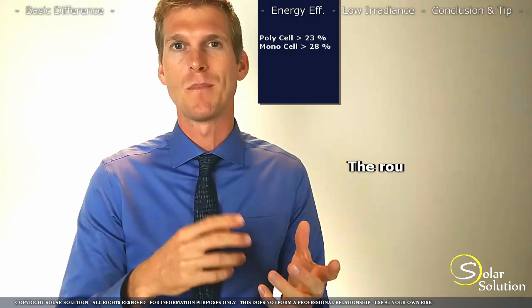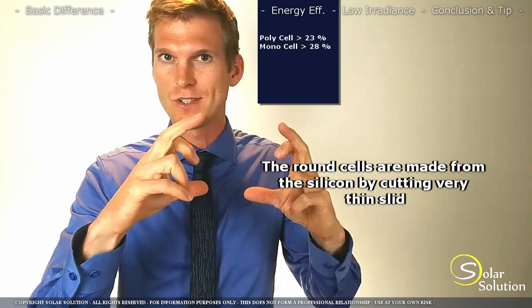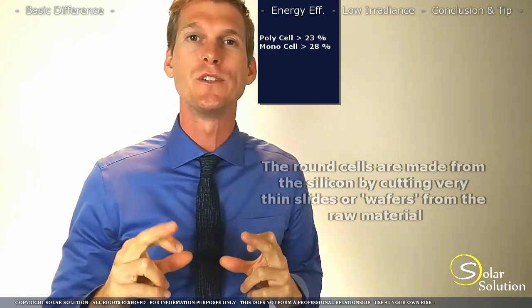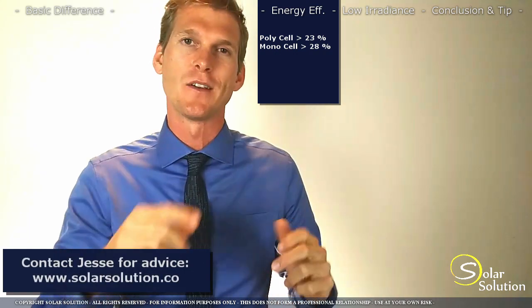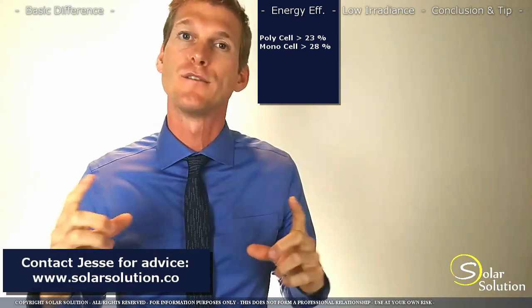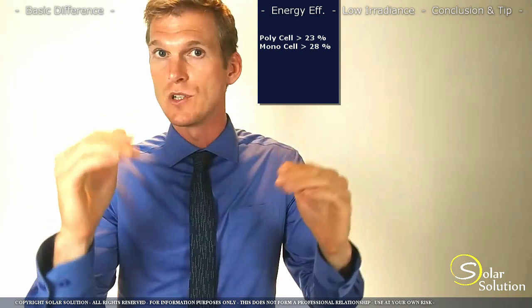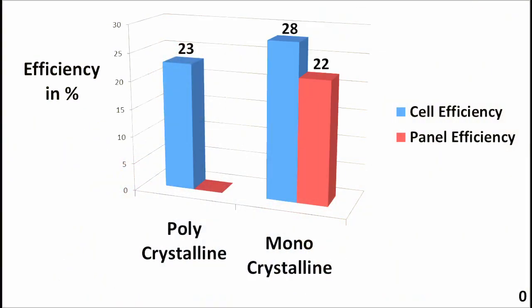So if we want to make a monocrystalline panel we take these round cells, we cut off the sides in order to make a square, and then with all these squares we make one panel. Now since we cut off the sides and throw them away, this is one of the reasons why the fabrication cost of a panel increases. The overall efficiency of the panel itself is always lower than the efficiency of the cells. So the average value of a monocrystalline panel is between 17 and 22% efficiency.